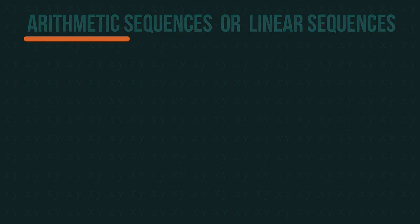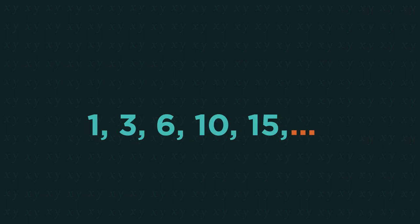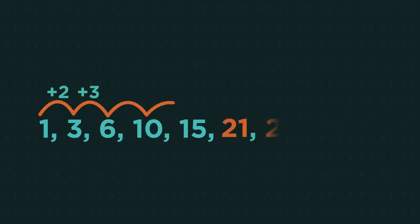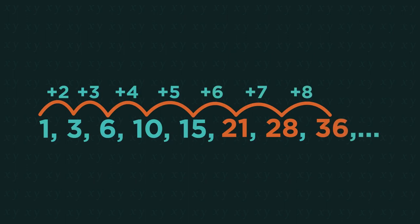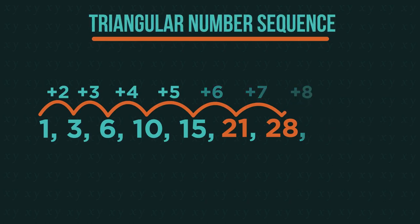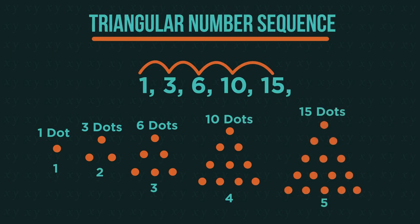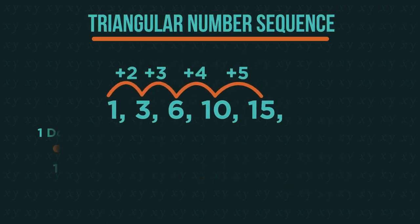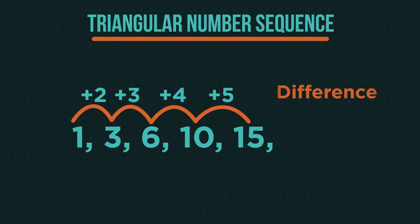Can you find the next three terms of this sequence? Did you get 21, 28 and 36? These are the triangular numbers, or the triangular number sequence. The sequence comes from the pattern of dots needed to make a triangle. They don't have a common difference — the difference changes each time. You add two, then three, then four, then five.